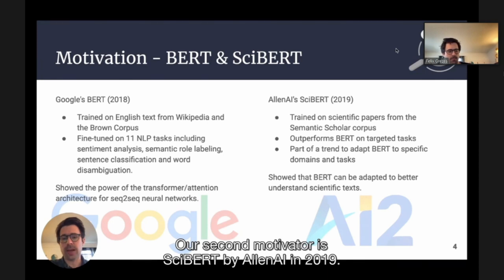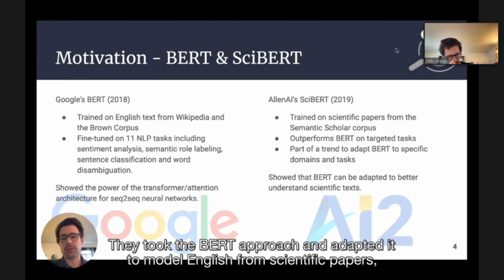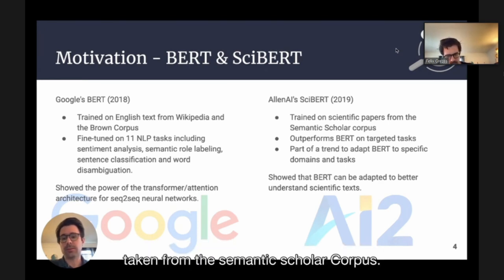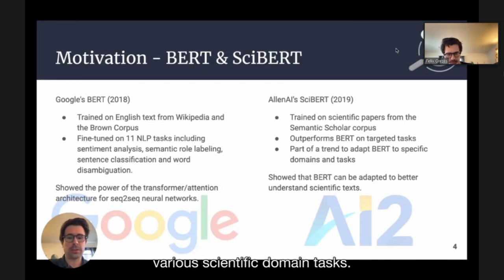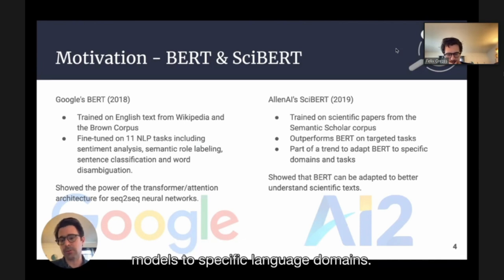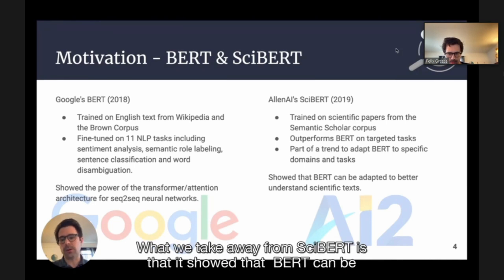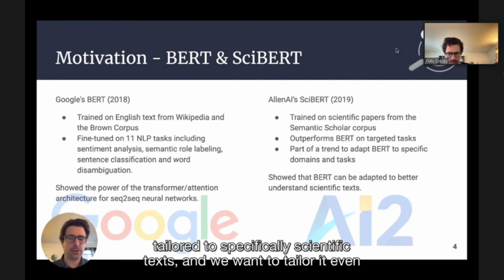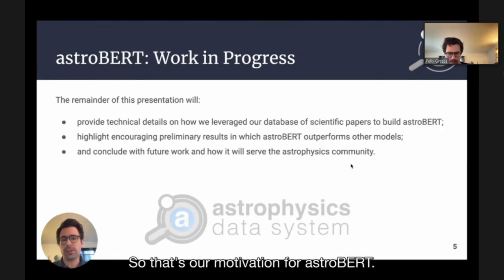Our second motivator is SciBERT by Allen AI in 2019. They took the BERT approach and adapted it to model English from scientific papers taken from the Semantic Scholar corpus. They showed that this adapted model outperforms the original BERT on various scientific domain tasks. This is part of a larger trend that adapts generically successful models to specific language domains. What we take away from SciBERT is that it showed BERT can be tailored to specifically scientific text, and we want to tailor it even more specifically to astrophysics.